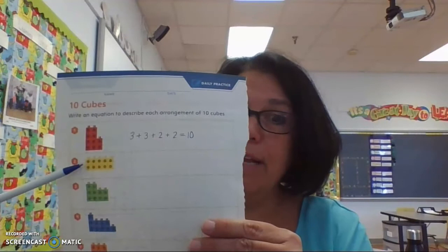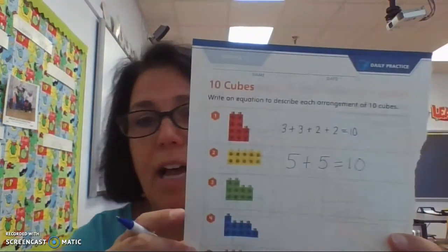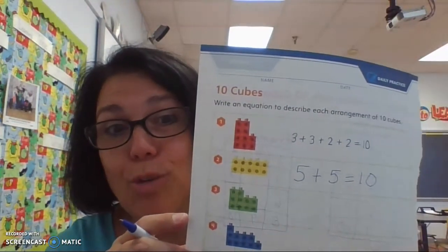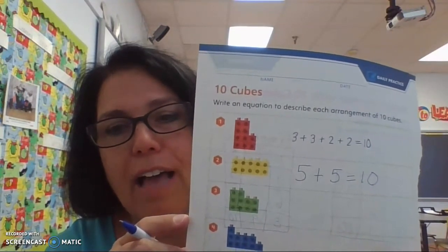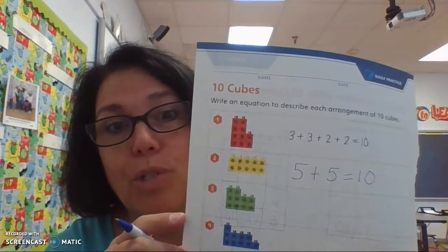So, if we were to write that as an equation over here, we would write, take a moment and think about it. And while you're thinking about it, I'm going to write what I think it is. Let's see if we agree. All righty. I thought that because there were 5 cubes on the top and 5 cubes on the bottom, that that was a picture of the equation 5 plus 5 equals 10.